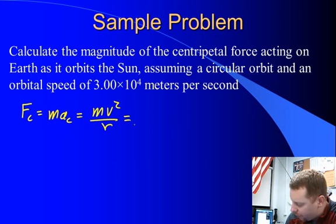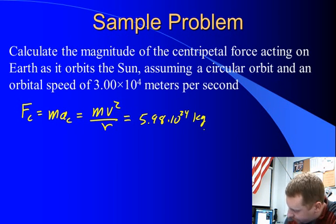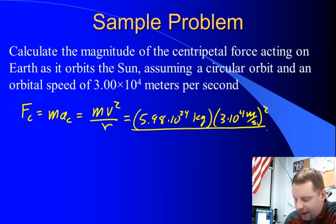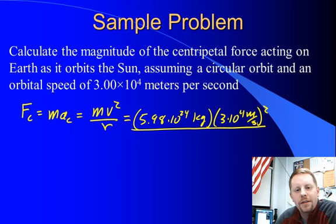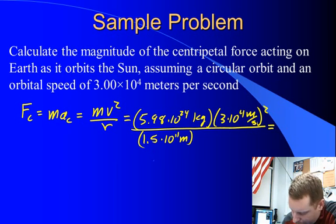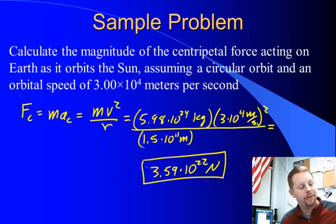In this case, our mass is going to be the mass of the earth, 5.98 times 10 to the 24 kilograms times the square of the velocity, 3 times 10 to the 4 meters per second squared, divided by the radius, and we'll take the best known estimate for the mean radius from the center of the sun to the center of the earth, roughly 1.5 times 10 to the 11 meters, and I come up with the value of about 3.59 times 10 to the 22nd newtons. An awful lot of force to keep the earth in its circular orbit.